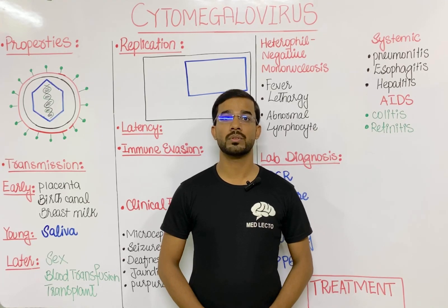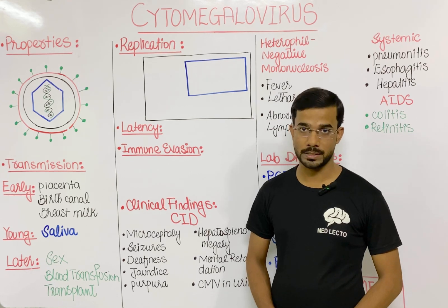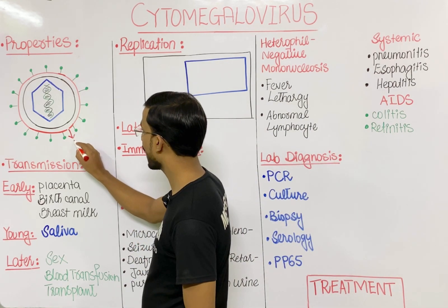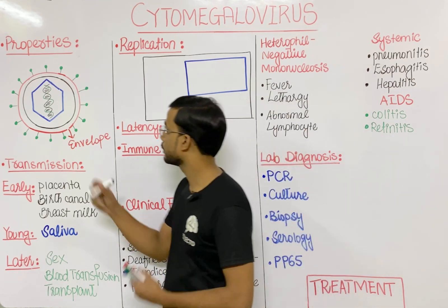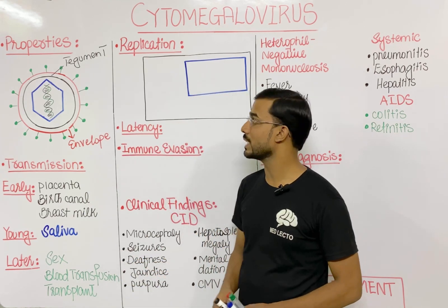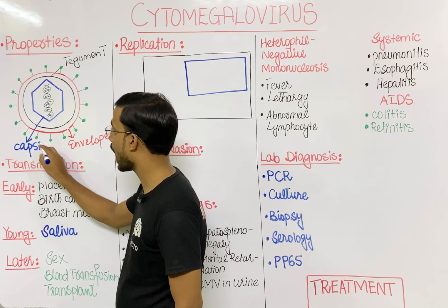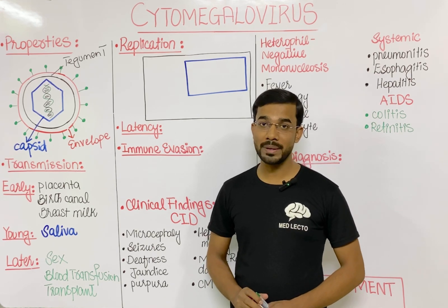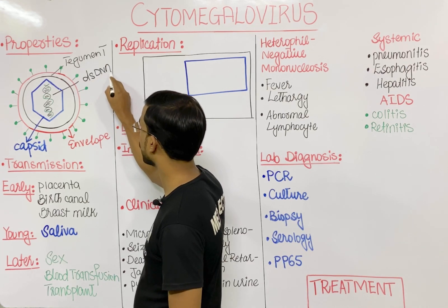In this lecture we are going to discuss in detail about the cytomegalovirus. Cytomegalovirus is an enveloped virus, so on the outside you will see the presence of the envelope. Next you will see the presence of the tegument protein. Beneath the tegument you will see the presence of the capsid, which is made up of protein. The shape of the capsid is icosahedral, and inside you will see the genomic material, which is double-stranded DNA.